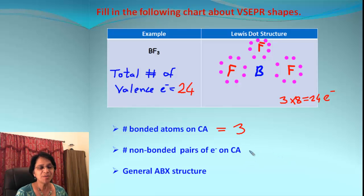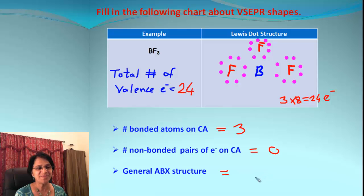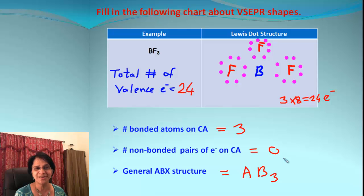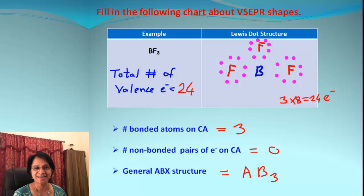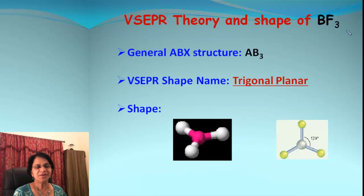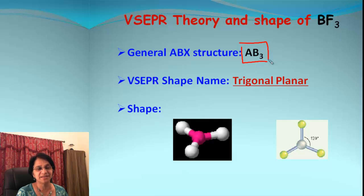For BF₃: the number of bonded atoms on the central boron atom is three (one fluorine each). Non-bonded pairs of electrons equal zero. The ABX structure: A is one (central atom), B is three (surrounding atoms), X equals zero. Note that boron only has six electrons around it, which is one of the exceptions to the octet rule, but it still forms a stable structure.